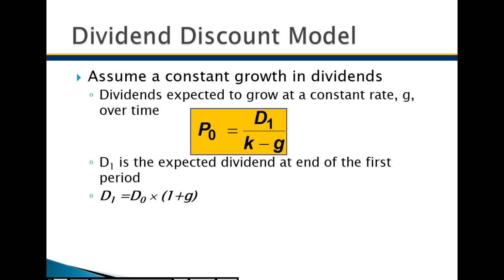The higher the growth rate in the dividend, the more valuable the stock — a company promising 25% growth in its dividend is much more valuable than one offering 5%. The size of G relative to K is a big factor in stock price. However, this is a rarity — it's uncommon today for companies to promise a constant growth in dividends. In the past, 100 years ago, it wasn't uncommon, and it was sort of like a promise to get interest.